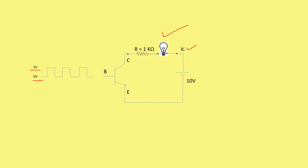When I apply now 5 volts, that means IB is maximum. So obviously IC would also be maximum. So when I apply 5 volts, I get the bulb is on because IC is flowing. This condition is known as saturation. When transistor is operated either in cutoff or in saturation, at that time transistor is working as a switch.